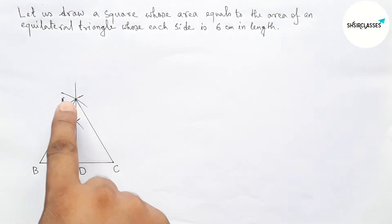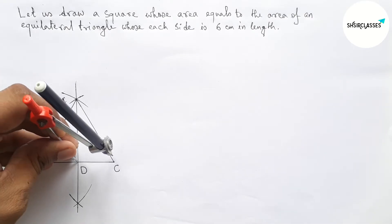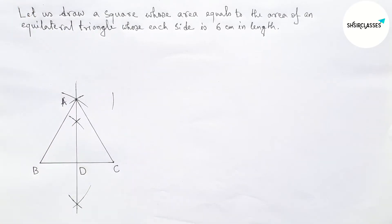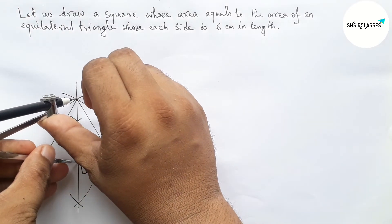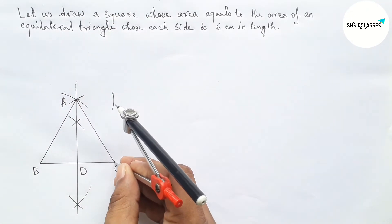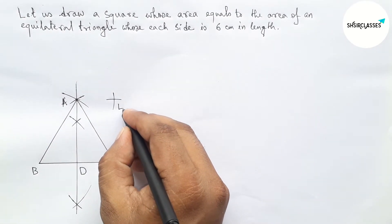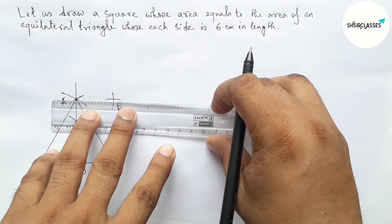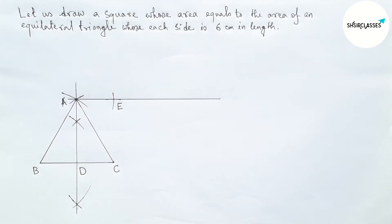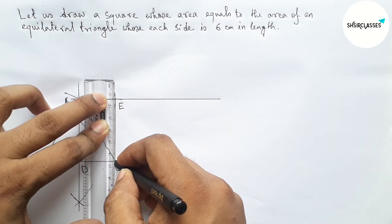Next, drawing a line parallel to BC through point A. First taking the length DC and putting the compass on point A, drawing an arc. Now taking the length AD and putting the compass on point C and cutting here. Taking point E. Now joining AE and extending it — this is parallel to BC. Now joining EC.